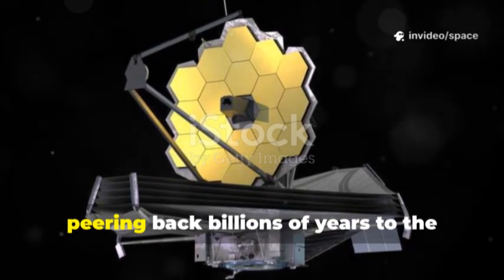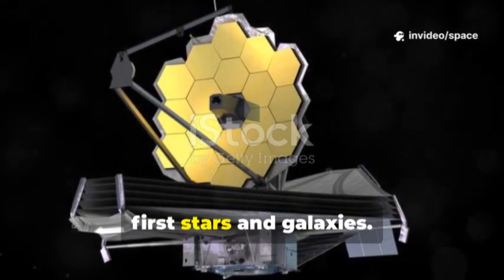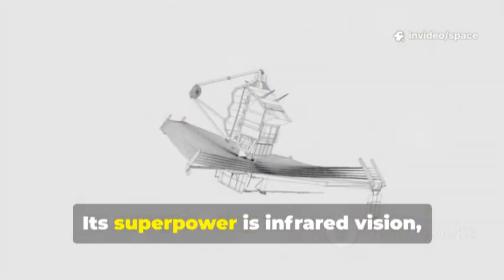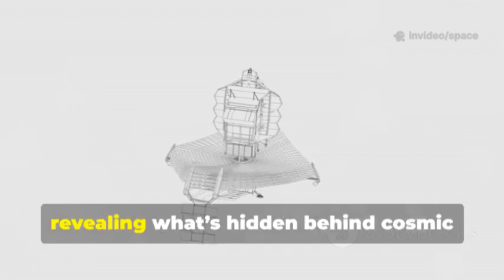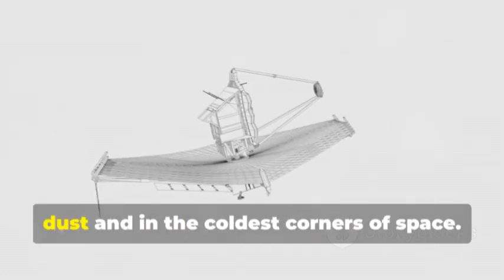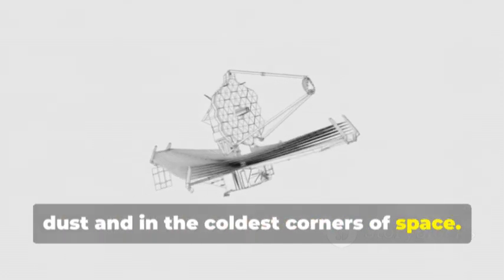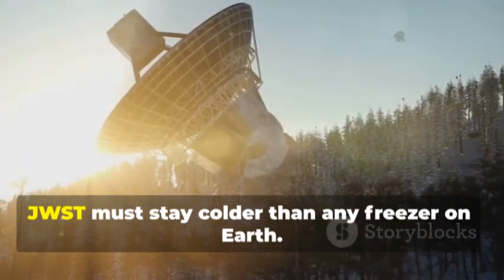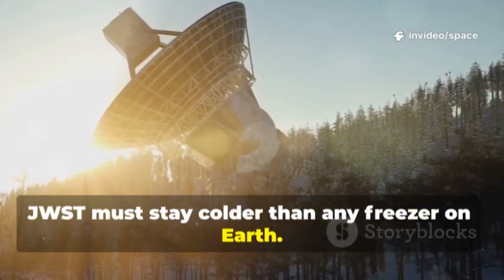JWST is a time machine, peering back billions of years to the first stars and galaxies. Its superpower is infrared vision, revealing what's hidden behind cosmic dust and in the coldest corners of space. To see faint heat signals, JWST must stay colder than any freezer on Earth.